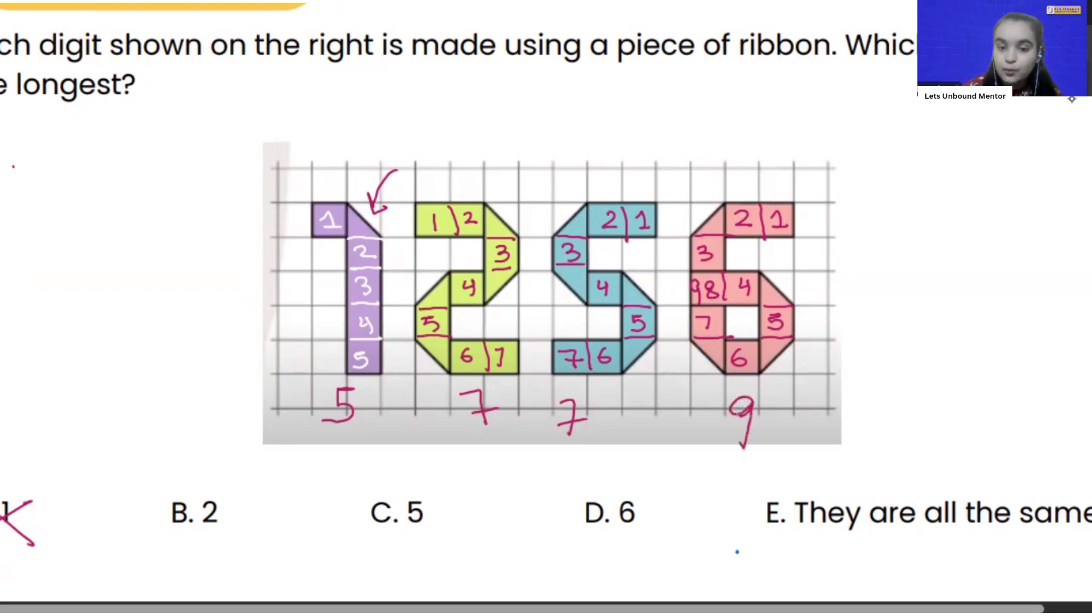So 9 which is the greatest number if we compare 5, 7 and 9. So we can say from here that the piece of ribbon which is the longest it is used for number 6 and we got our answer.